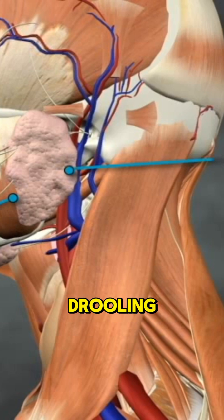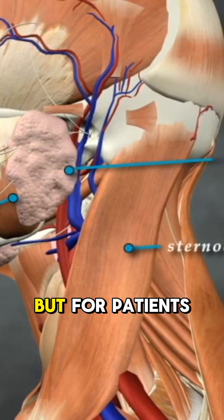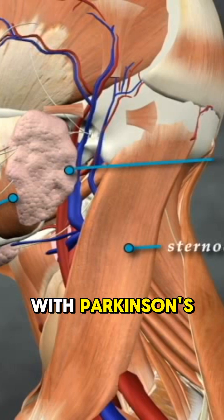Sialuria, aka chronic drooling, might sound harmless. But for patients with Parkinson's, ALS, or cerebral palsy, it's a nightmare.